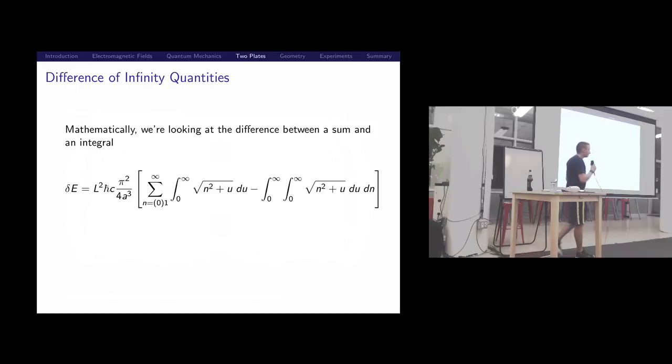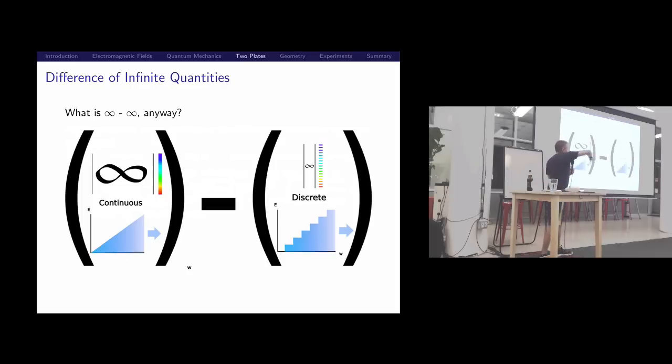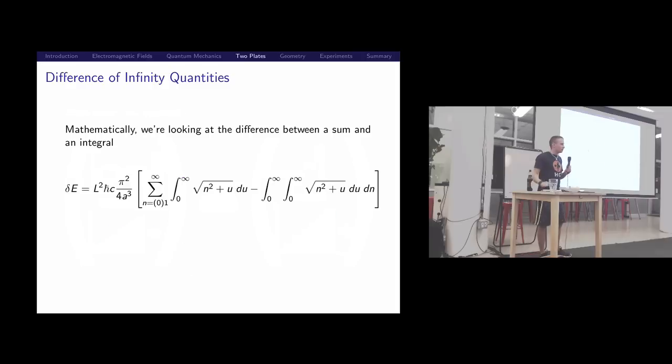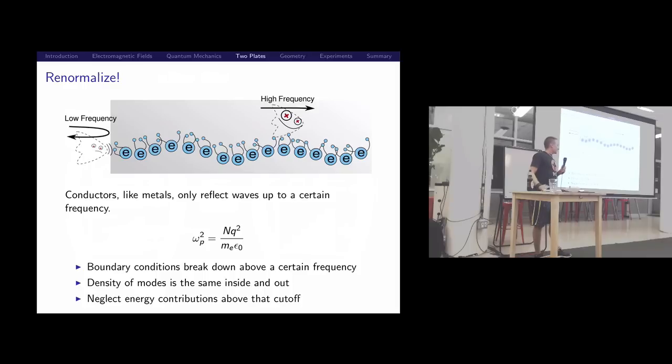Out here, this delta means change. This is the change in energy, the difference between the outside and the inside of the plates. L squared comes about because of the size of the plate. We expect it to scale with area. H bar is there from the Hamiltonian. C, speed of light, shows up because of wavelengths. And then there's this sum here and this integral here, and we're subtracting them.